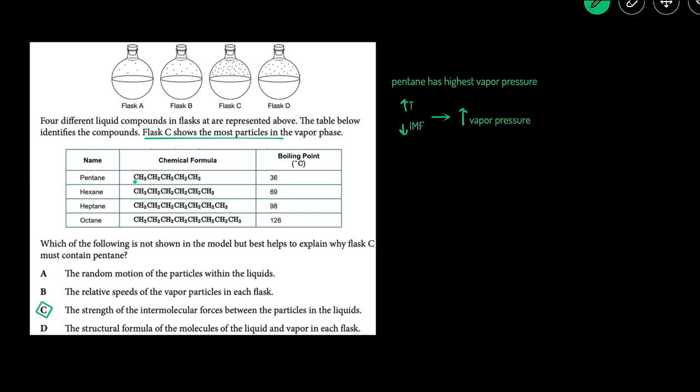Because flask C contains pentane, all of these four compounds are non-polar so they'll all have London dispersion force. But pentane has the lowest molar mass, the least number of electrons, so it will have the weakest intermolecular force which will cause it to have the highest vapor pressure.